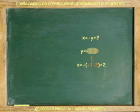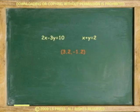Negative times negative is positive. x equals 1.2 plus 2, or x equals 3.2. The solution to the system is point 3.2, negative 1.2.